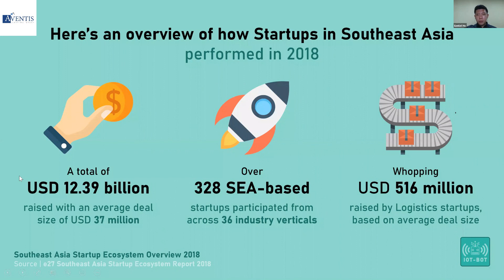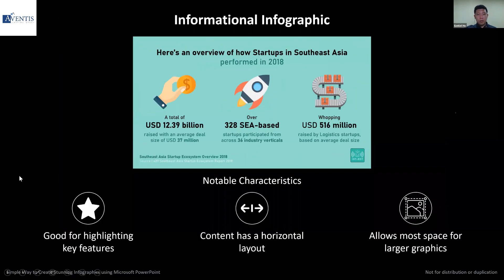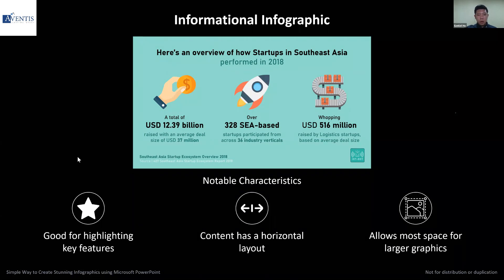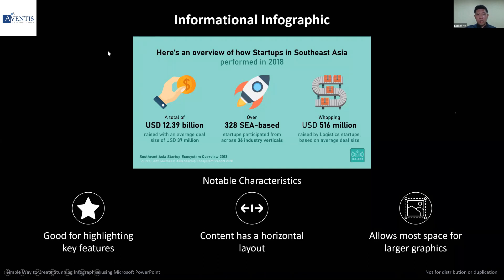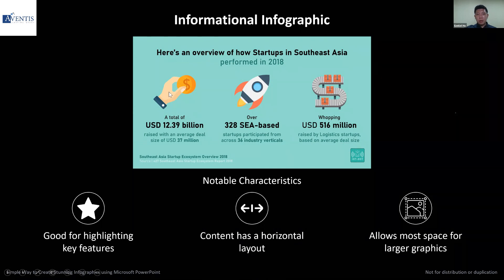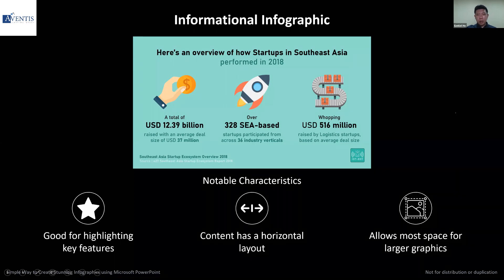The first is the most common: this is an informational infographic. This is useful for highlighting key features. You'll notice it uses a horizontal layout, and because you use this informational infographic layout especially with a landscape orientation, you'll notice that you have a lot of space to make your graphic larger. This is very useful when you're highlighting just some key points for your product or some information that you want to highlight.